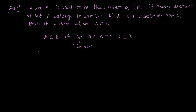Let us come to some well-known subsets. Is the set of rational numbers a subset of real numbers? The answer is yes, because real numbers consist of rational numbers as well as irrational numbers, so rational numbers are indeed a subset of real numbers.